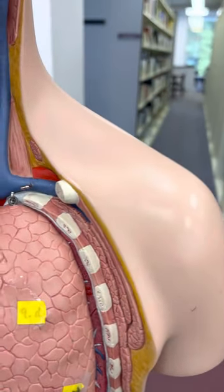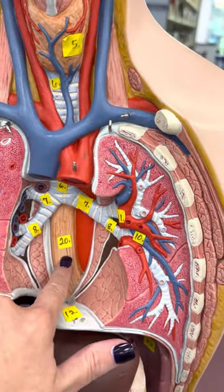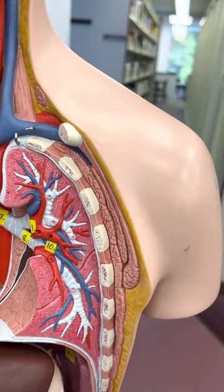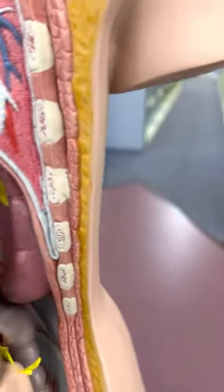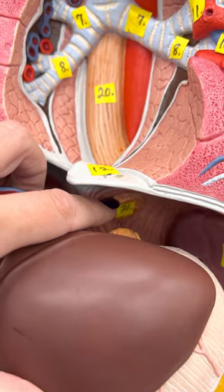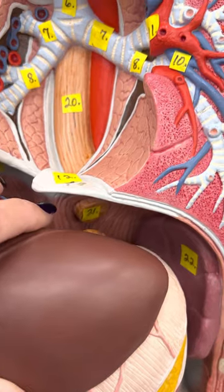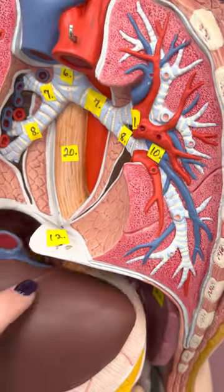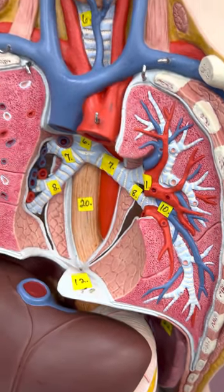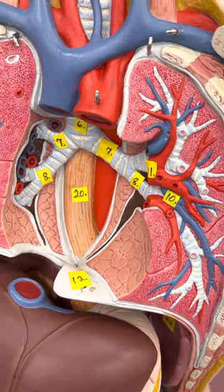Number 20 — we need to get the lungs out of the way — this is the esophagus, going down there. Number 21 is where the esophagus actually penetrates through the diaphragm, and this is called the esophageal hiatus. And this is the diaphragm — the dome-shaped muscle important for breathing.